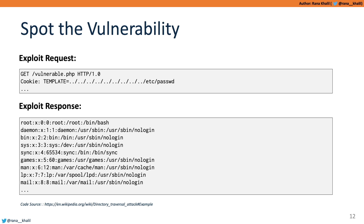It's worth mentioning we specifically picked the passwd file because it's world-readable — regardless of the privileges the application runs with, we'll be able to view its content. If the application were running with root privileges, which is against the concept of least privilege, we'd be able to access even more sensitive files like the shadow password file, which stores hashed passwords of local users on the system.